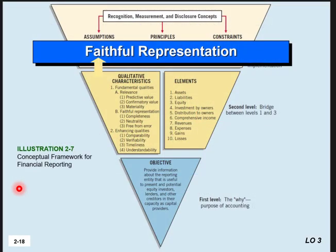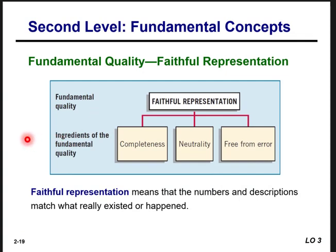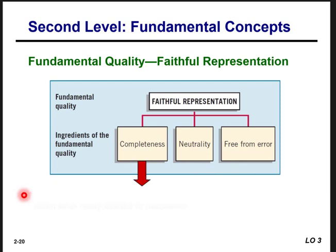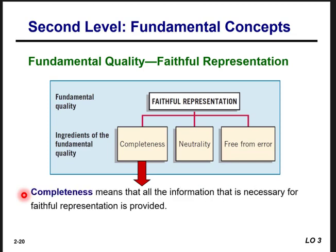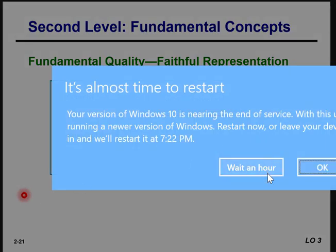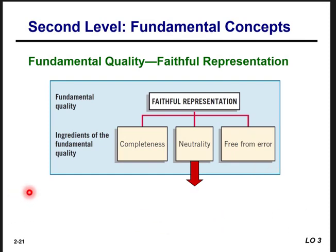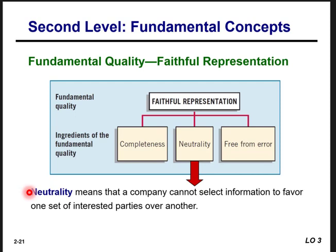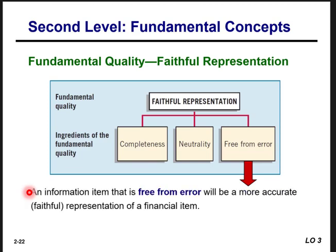The second fundamental quality is faithful representation. Its ingredients consist of completeness, neutrality, and free from error. Faithful representation means that numbers and descriptions match what really existed or happened. Completeness means all information necessary for faithful representation is provided. Neutrality means a company cannot select information to favor one set of interested parties over another. Free from error means an information item will be a more accurate, faithful representation of a financial item.